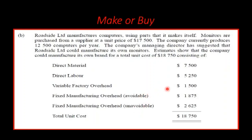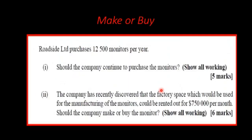We will look at the relevant costs and then decide whether to make or buy. The decision is usually based on relevant costs. Roadside Limited purchases 12,500 monitors per year. Should the company continue to purchase the monitors? The company has recently discovered that factory space, which would be used for manufacturing the monitors, could be rented out for $750,000 per month. Should the company make or buy the monitors? This part introduces another element — an opportunity cost.